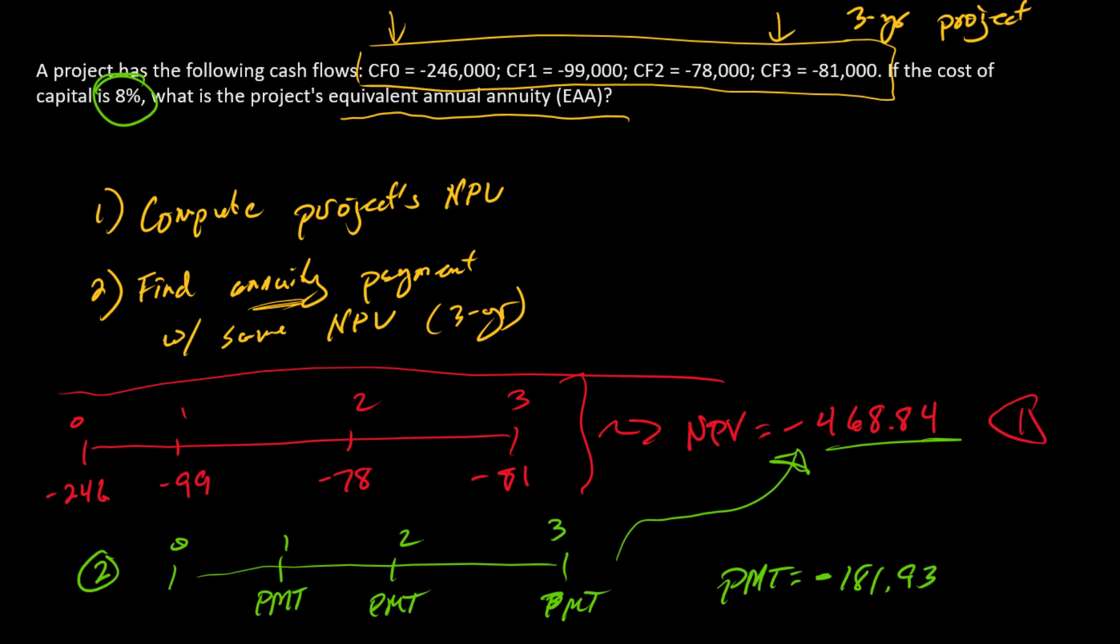And we need to make this a negative number, right? Because these need to correspond to one another. And so the way you want to interpret this is a three-year annuity where you pay 181.93 each year at the end of the year is equivalent in present value terms as this original project.